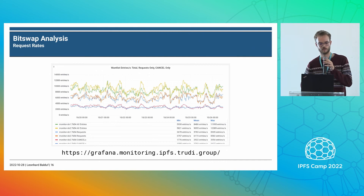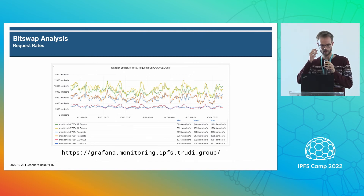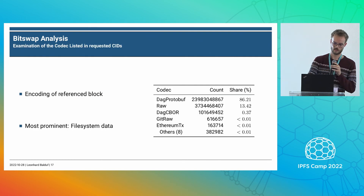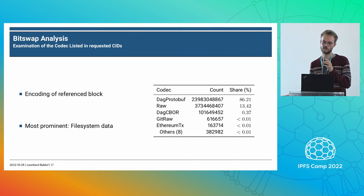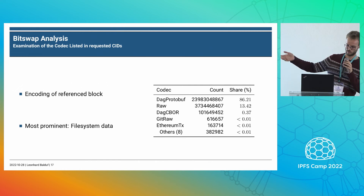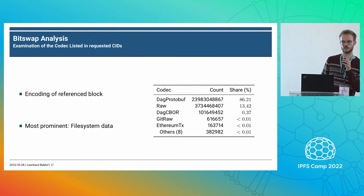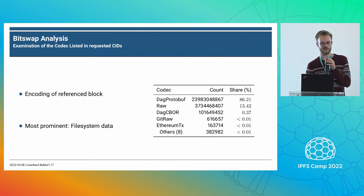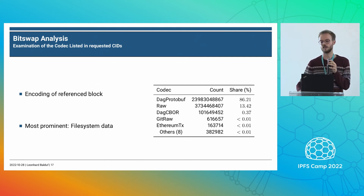Looking at request rates, we get many thousands of requests per second per monitor, which is quite nice, but it generates a lot of data we have to store somewhere, which is one reason we want to do this in real-time ultimately. Looking at the codec data — this is old data — the top two entries are DAG-protobuf and raw, which are codecs used for file system operations. This means people use IPFS as a file system, which isn't too surprising for a distributed file system. You can also use it to request Git blocks or Ethereum transactions, but that's not done very often.